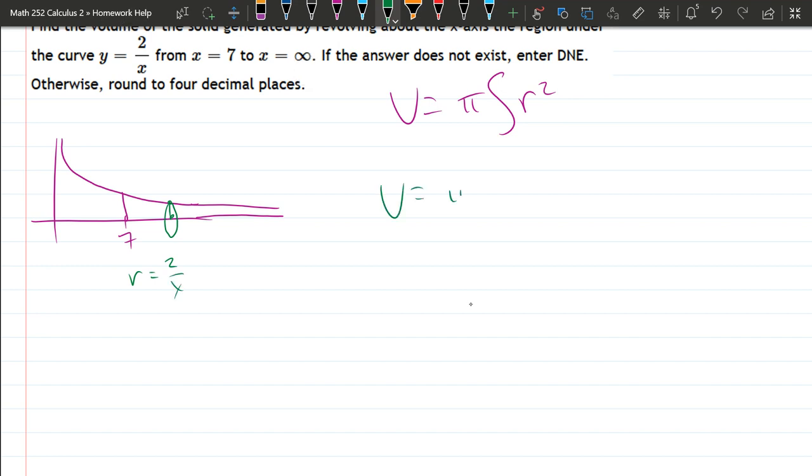So our volume will be pi integral. Now what's the upper bound? The upper bound's infinity. So what we're gonna do is we're gonna let the upper bound equal b, and at the end we're gonna take a limit as b approaches infinity.